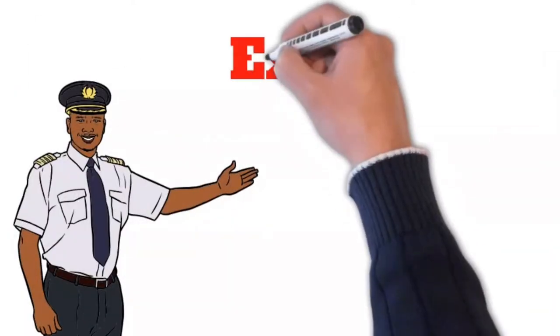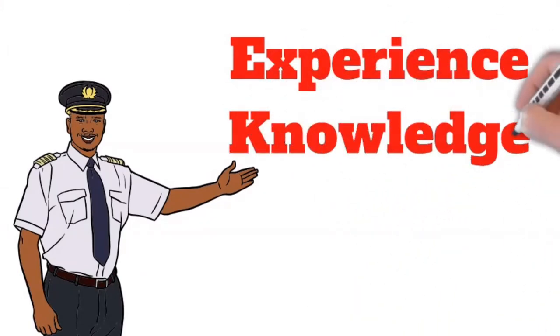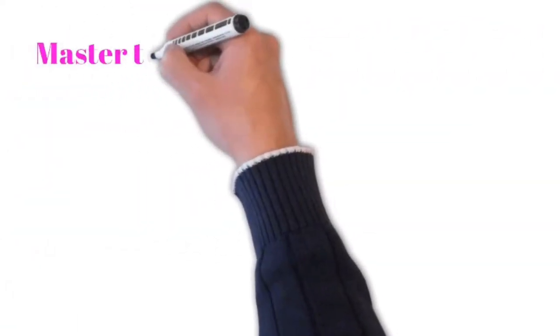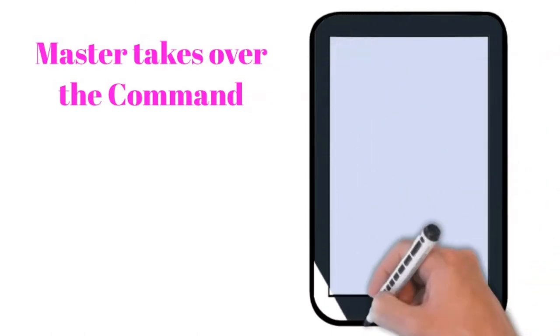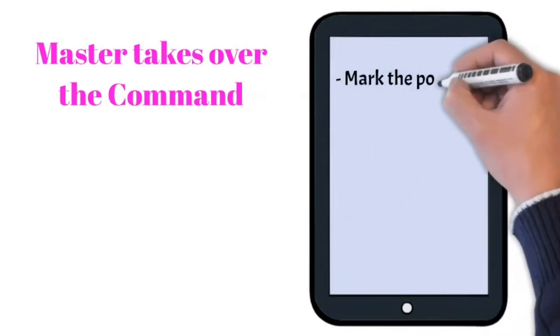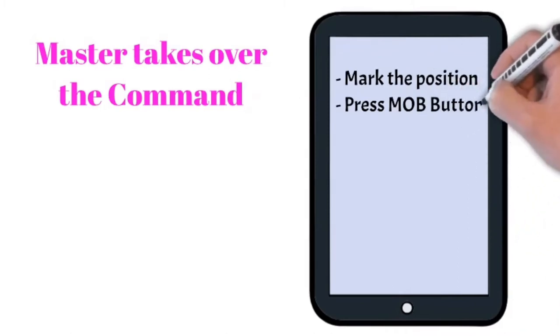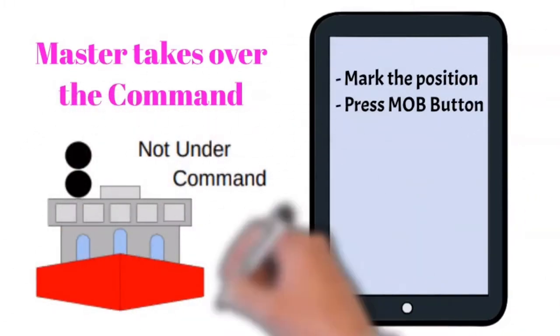Master's experience, knowledge and his overriding authority helps in making quick and bold decisions to save lives. Once the master takes over the command of the situation, act on his orders. Mark the position of collision on chart or by pressing the MOB button on GPS for future reference. Exhibit not under command signal if the ship has lost its headway completely.